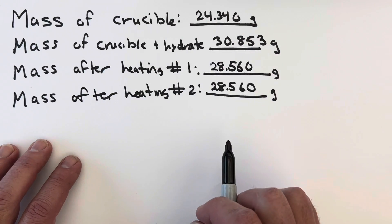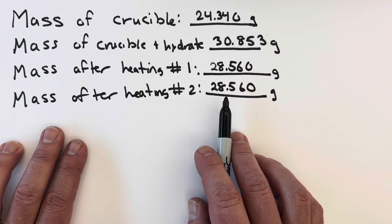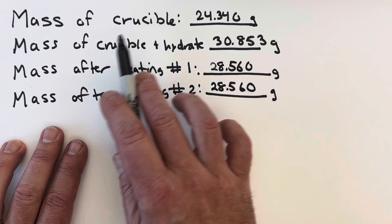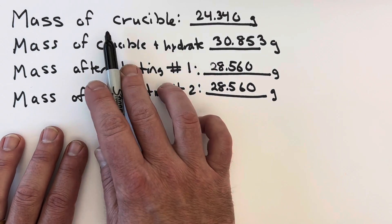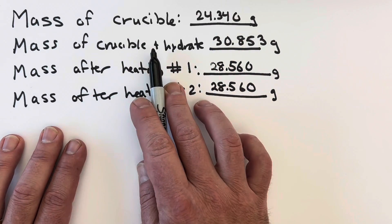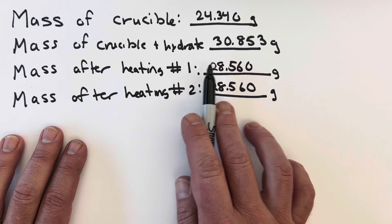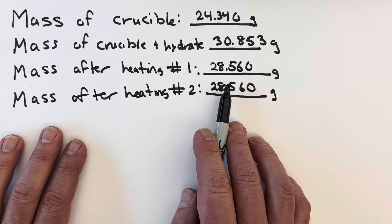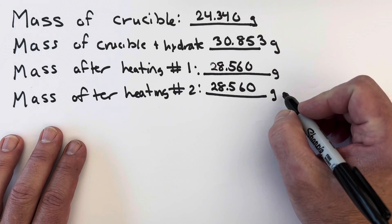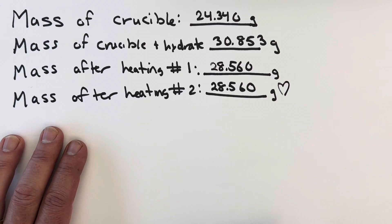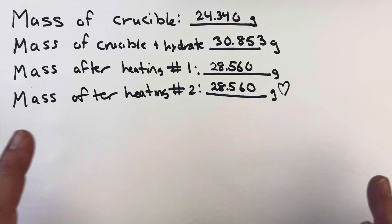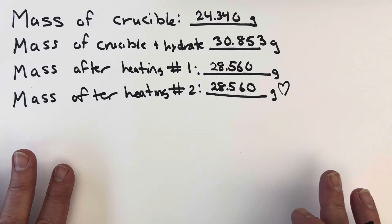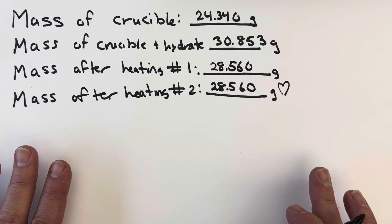All right, here's the data table that I made for my data. If you're doing a lab like this, you should make a data table like this as well. We've got the mass of the crucible, the crucible plus the hydrate at the beginning, and then the masses after both heatings. We can see again that they're the same, which is always a good thing when your masses agree. To get started, we're going to need to know the mass of the water that was driven off and the mass of the copper sulfate anhydrous that's left at the end.